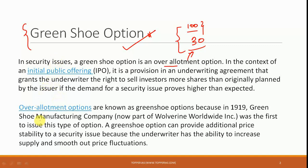Why is it called the green shoe option? It is so called because this option was for the first time used in the year 1919 by a company called the Green Shoe Manufacturing Company, and that is the reason this option has got its name.